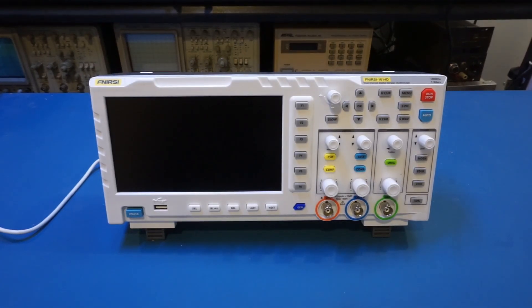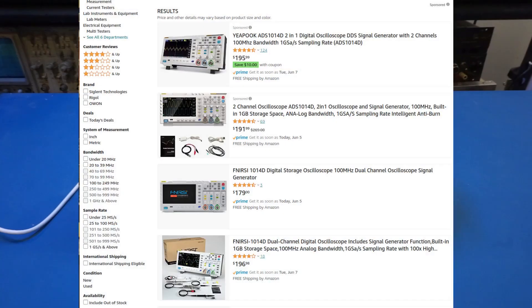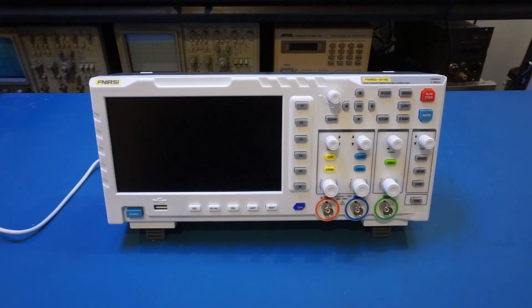This is a Finersi 1014D. I'm always amused at the product names Chinese companies choose and this certainly is one of them. I believe this scope also comes branded as EPUC ADS 1014D. As far as I can tell from the product specifications and pictures, these two oscilloscopes seem to be identical and are simply just rebranded.